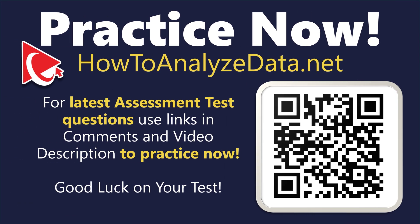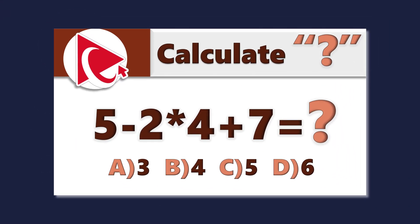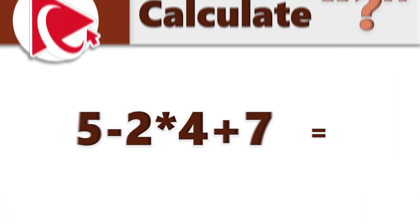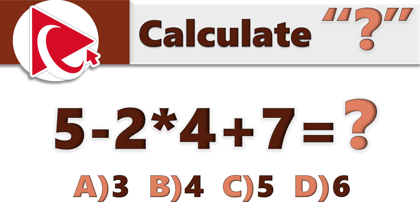Get ready for a mind-bending question that will make you question your own existence. Well, maybe not to that extreme, but definitely a cognitive workout. You are presented with a very simple expression: 5 minus 2 multiplied by 4 plus 7 equals question mark. And question mark is the value that you need to calculate. Once calculated, select your answer out of four possible choices. Choice A, 3. Choice B, 4. Choice C, 5. And last but not least, choice D, 6.